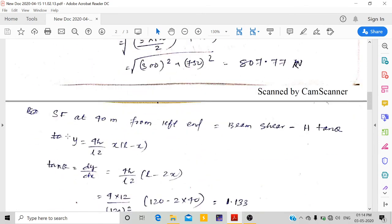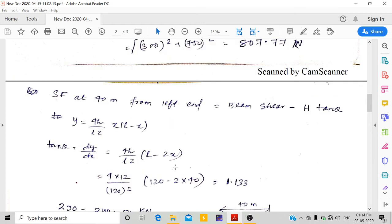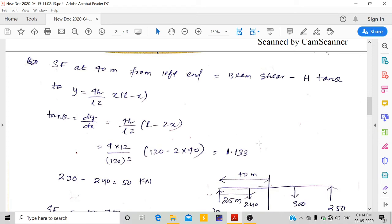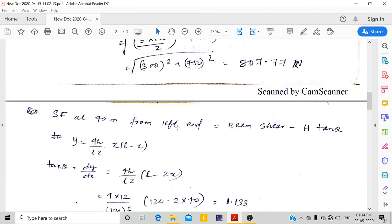Now we need to calculate the shear force at 40 meters from the left end. Shear force can be calculated as beam shear minus H·tan(θ). To find tan(θ), we use y equals 4h/(L²)·x·(L-x), and dy/dx gives us tan(θ). In place of x, I put 40, giving 0.133.